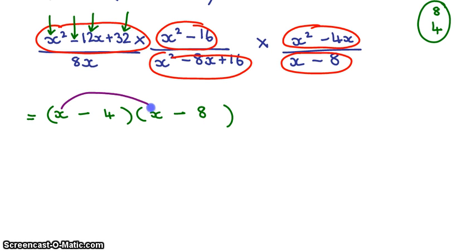Now let's check. x squared, yes. Minus 8x minus 4x will give me minus 12x, and negative times negative will give me positive 32. So I am right.